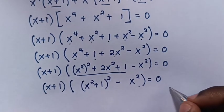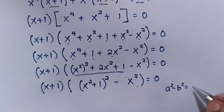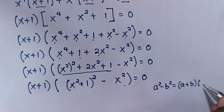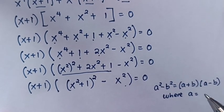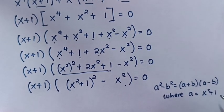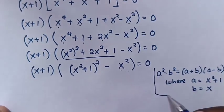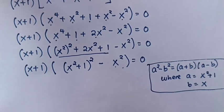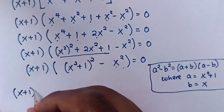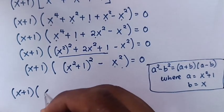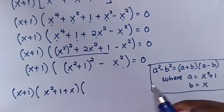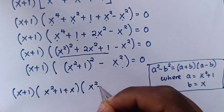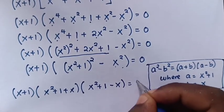This part of the equation is in the form a² − b² = (a + b)(a − b). Here a = x² + 1 and b = x. So in our equation, in terms of (a + b)(a − b), it will be (x + 1)(x² + x + 1)(x² − x + 1) = 0.